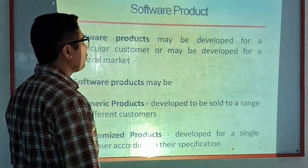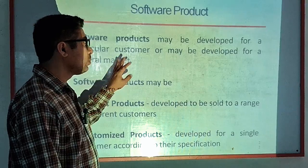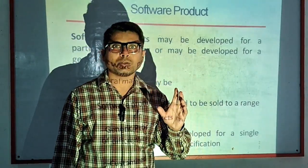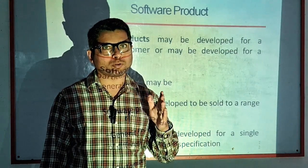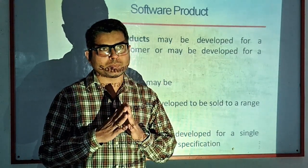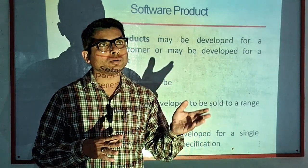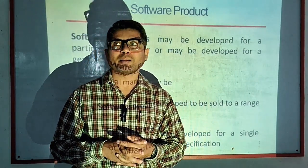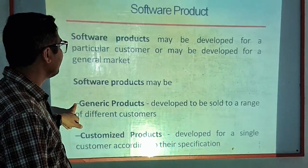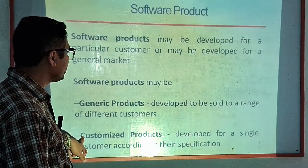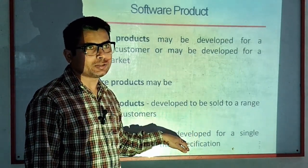What is a software product? A software product may be developed for a particular customer or for a general market. It is software that has been developed to sell in the open market or to a particular person, firm, or organization so that the developer can gain monetary returns. Software products may be generic products developed for a range of different customers, or customized products developed for a single customer according to their specifications.